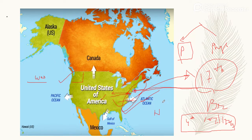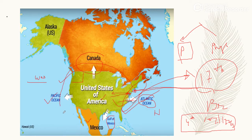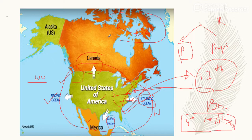United States of America کی boundaries کی بات کریں تو North میں Canada، East میں Atlantic Ocean، South میں Gulf of Mexico and Mexico، اور West میں Pacific Ocean ہے۔ USA, Russia and Canada کے بعد area wise third largest country of the world ہے۔